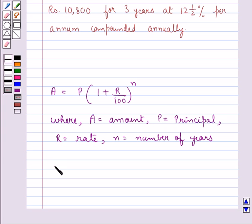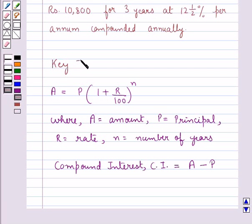And also compound interest C.I. is equal to amount A minus principal P. Now this is the key idea for this question.